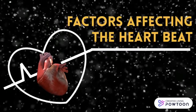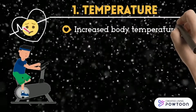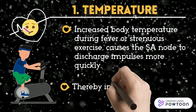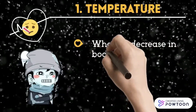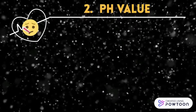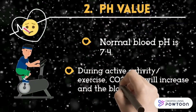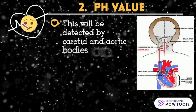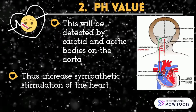Factors Affecting the Heartbeat. During active activity or exercise, carbon dioxide levels increase and blood pH decreases. This is detected by the carotid and aortic bodies on the aorta. This increases sympathetic stimulation of the heart and increases the heart rate.